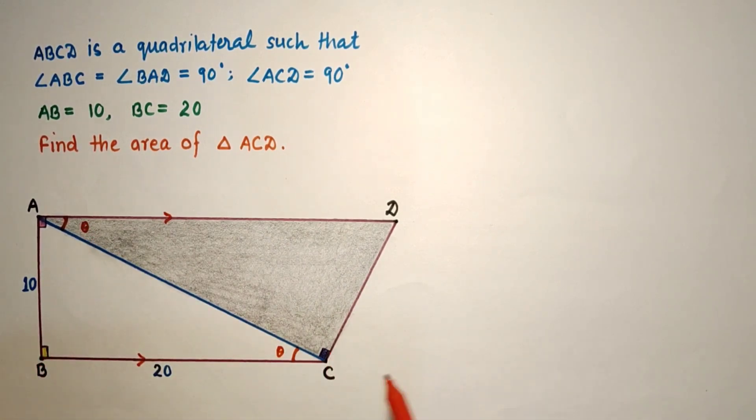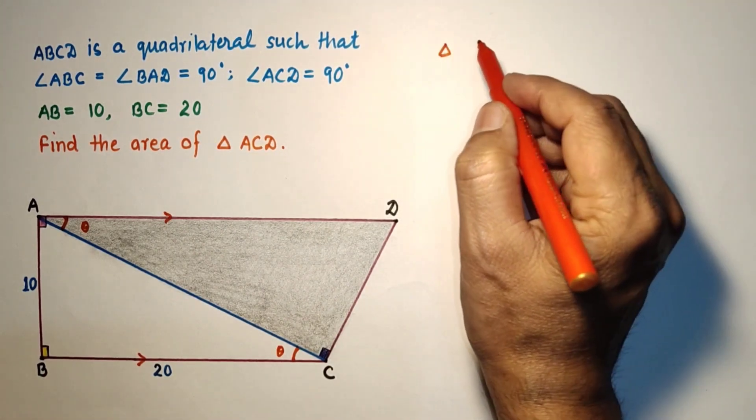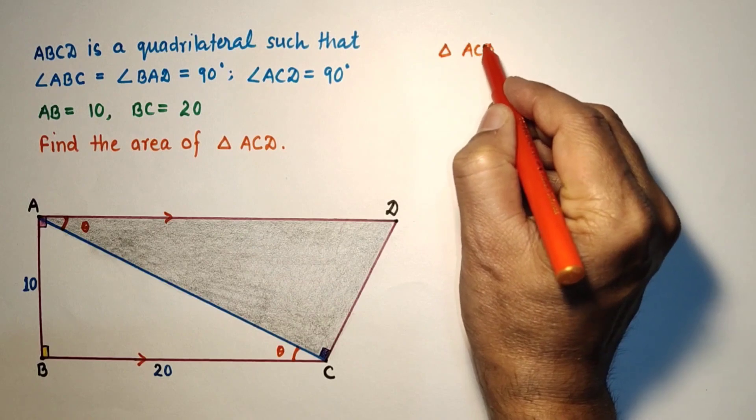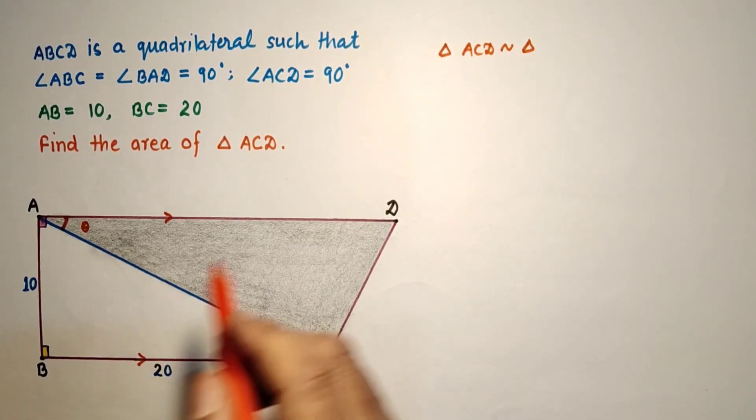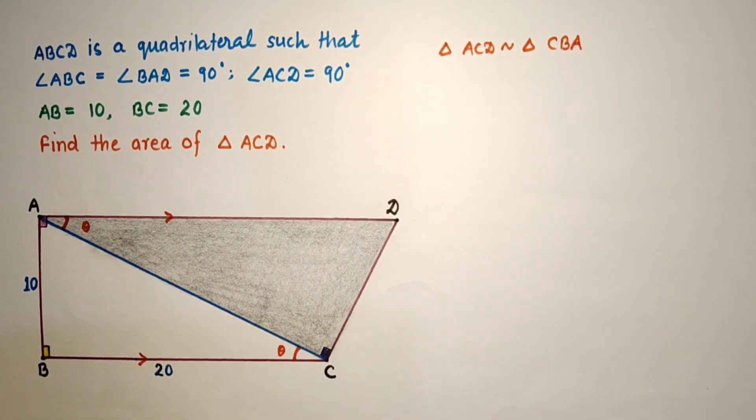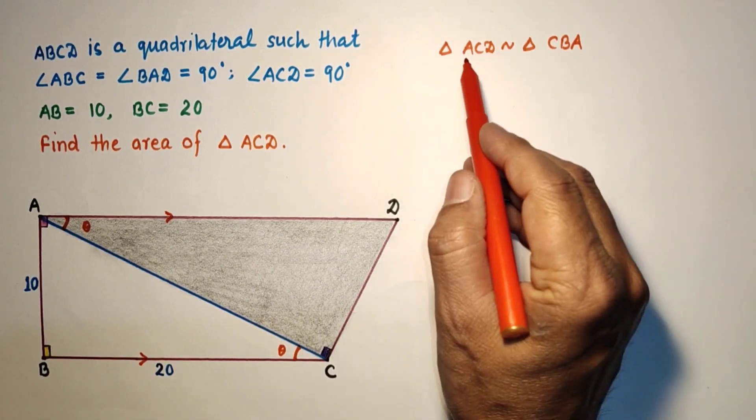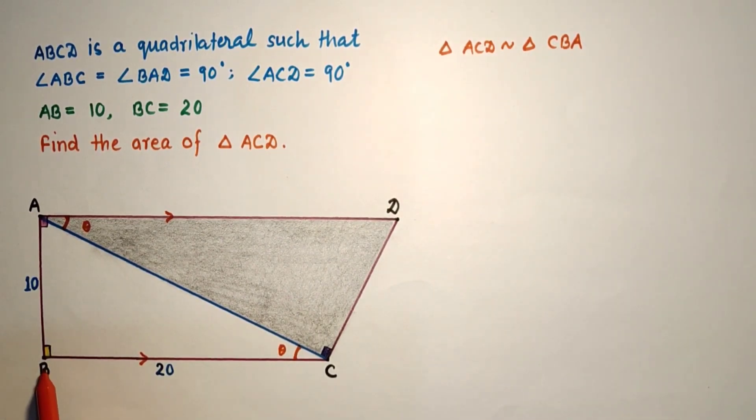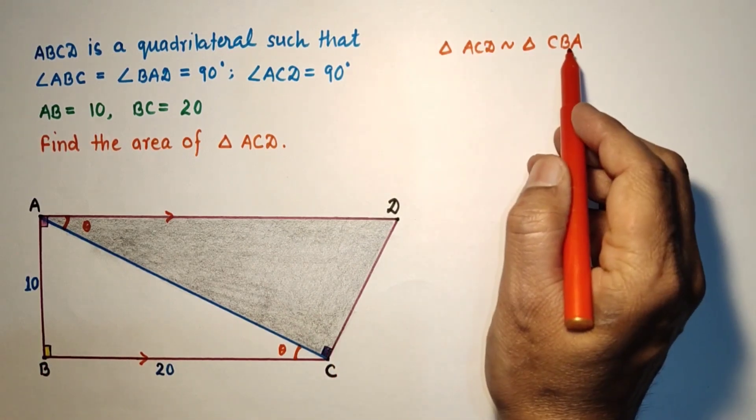So in triangle ACD and in triangle ACB, this angle is theta, this angle is theta, this is 90, this is 90. So we can say that triangle ACD is similar to triangle CBA by AA test of similarity. Angle A is theta, C is theta. A corresponds to C, B is 90 and C is 90, so C corresponds to B.